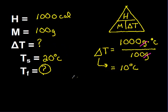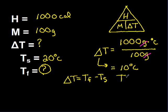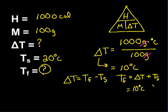If I know that delta T equals final minus starting temperature, I can rearrange the equation to solve for whatever I need. Since I'm solving for final temperature, I rearrange to get: final temperature equals delta T plus starting temperature. Plugging in my values: delta T is 10 degrees Celsius, starting temperature is 20 degrees Celsius. Adding them gives me a final temperature of 30 degrees Celsius.